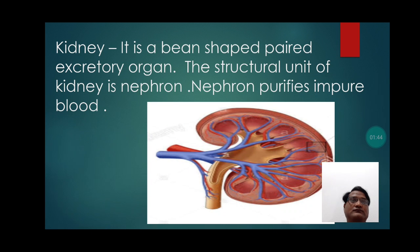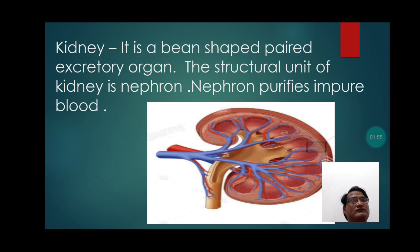Kidney — it is a bean-shaped, paired excretory organ. The structural unit of the kidney is the nephron. The nephron purifies impure blood.